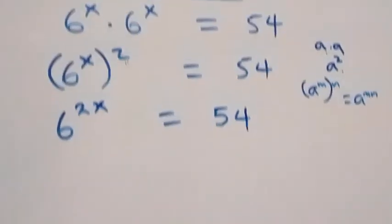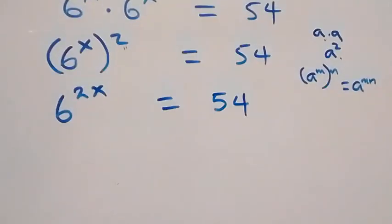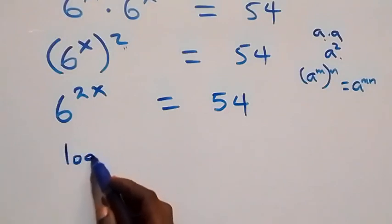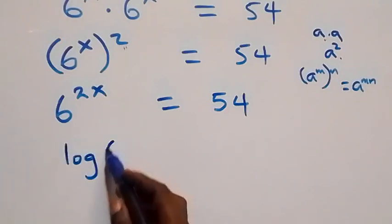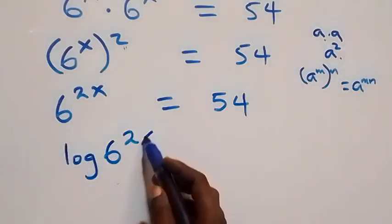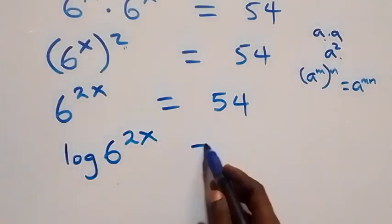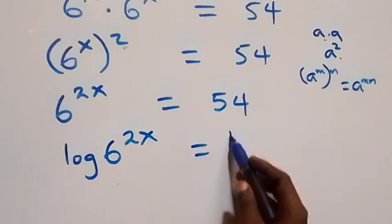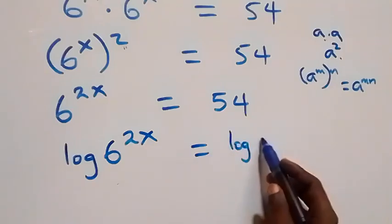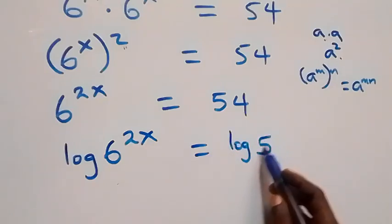The next step here: we take the log on both sides. That is, we have log of six raised to power 2x equals to log of fifty-four.